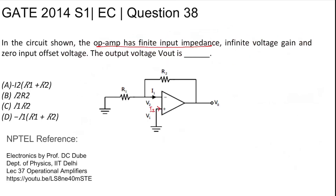So the answer is: output voltage equals I1·R2. Option C is the correct option.